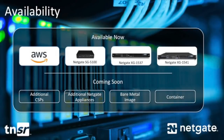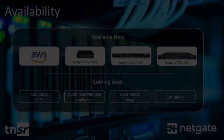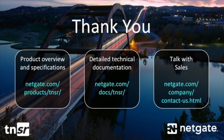Tensor is currently available as a software subscription on AWS or one of several NetGate appliances. There are plans to enable broader availability options in the very near future. If you'd like more information, here are three sources that should be helpful. Thank you for your time, and please reach out to us to discuss how Tensor might address your current and evolving secure networking needs.